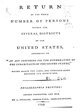Race and ethnicity in the United States Census, defined by the Federal Office of Management and Budget and the United States Census Bureau, are self-identification data items in which residents choose the race or races with which they most closely identify, and indicate whether or not they are of Hispanic or Latino origin. The racial categories represent a social-political construct for the race or races that respondents consider themselves to be and generally reflect a social definition of race recognized in this country.